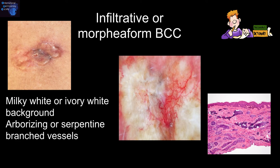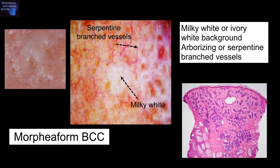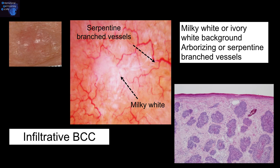Infiltrative or morpheaform basal cell carcinomas have the following features: milky white or ivory white background, and arborizing or serpentine branch vessels. In this example of a morpheaform basal cell carcinoma, we have serpentine branch vessels and a milky white appearance. Similarly, in this infiltrative basal cell carcinoma, we have serpentine branch vessels and a milky white appearance.